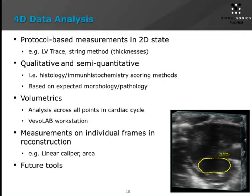The measurements and quantitation you can do right now with the application include protocol-based measurements in the 2D state. An example would be our existing LV trace measurement that gives you all the cardiac functional parameters, or another example would be the string method. There's a lot of power in qualitative and semi-quantitative assessments of hearts in 4D — an analogy here is the scoring methodologies used in histology and immunohistochemistry, where you're assessing the motion based on comparison to a normal animal or control group and looking at expected morphology and pathology.